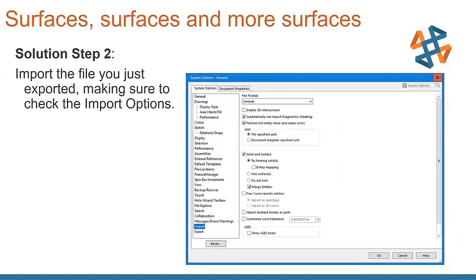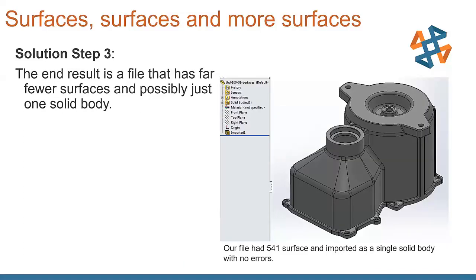Then you want to import the file you just exported, making sure to check the import options. There are options in here for trying to form solids, knitting surfaces, doing entity checks on this. So it gives us some good options as we go in and import this. I usually start with the default and then make some adjustments from there. There's also an automatically run import diagnostics and all of that.